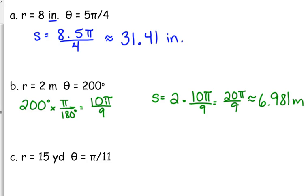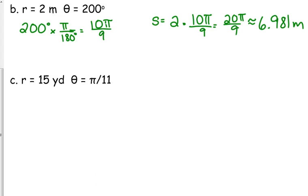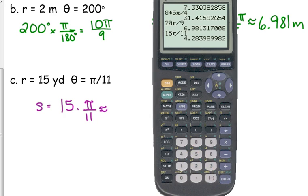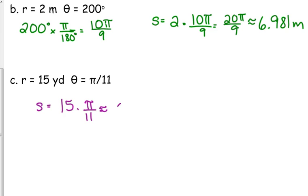The reason why this has to be in radians is because radians are set up to be, like, proportions of the circle, so that's why it works this way. That's why this formula works the way it does. All right, one more. 15 yards, theta is pi over 11. Kind of a weird measurement there, but s equals r times theta. I just want to multiply that. 15 pi divided by 11. 4.284 yards.